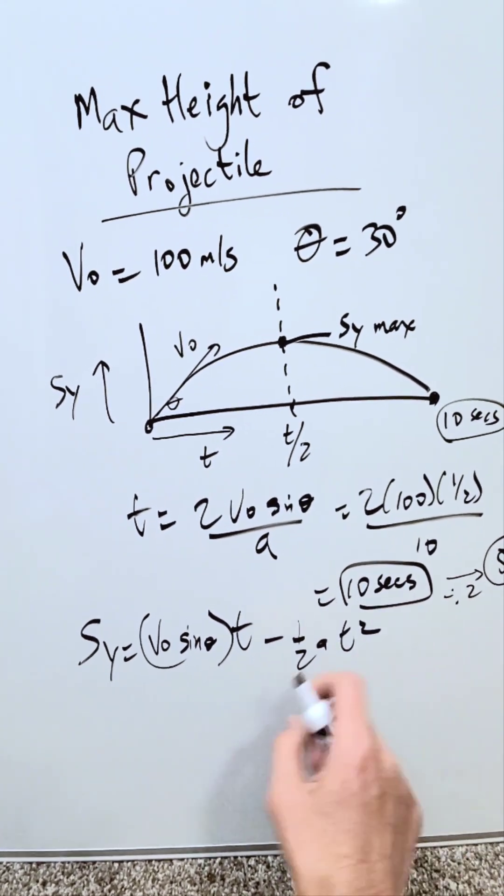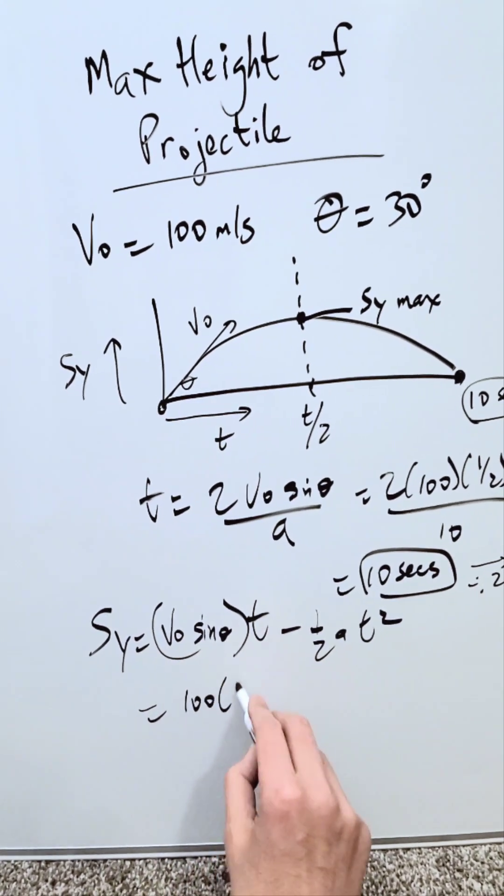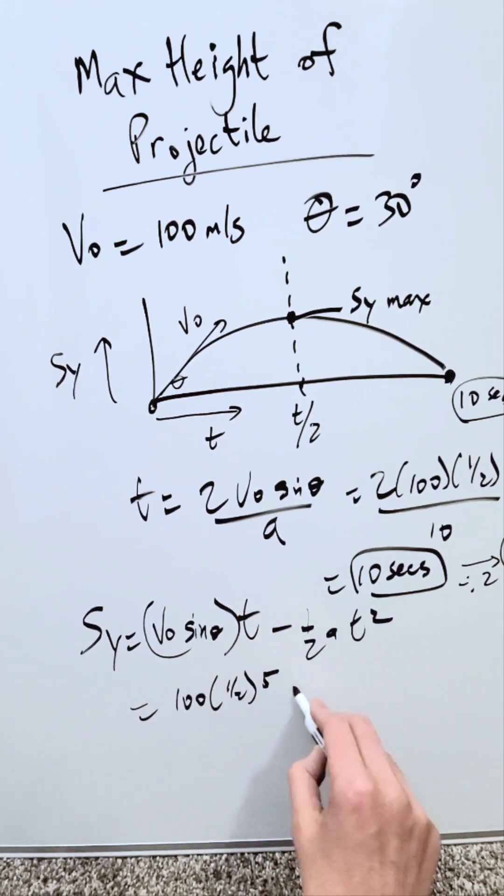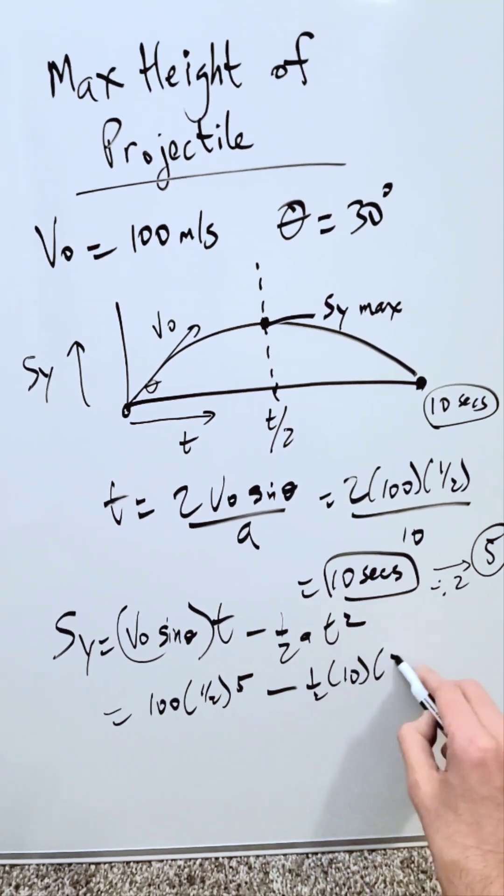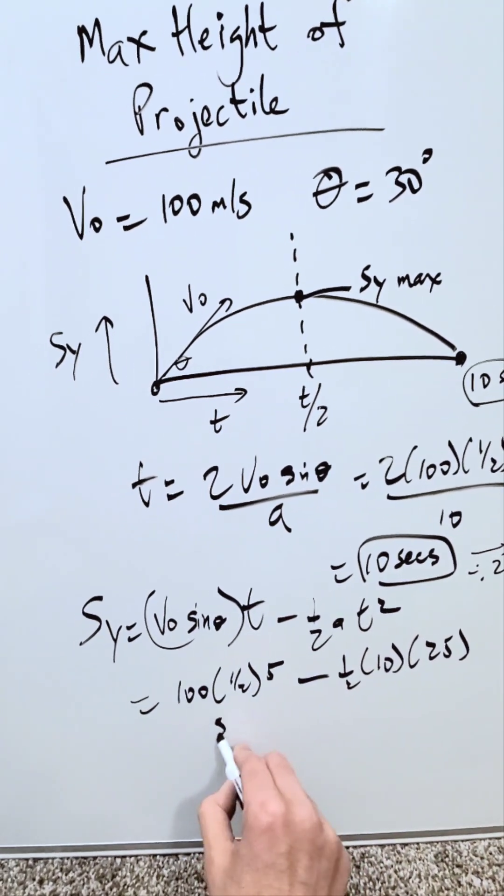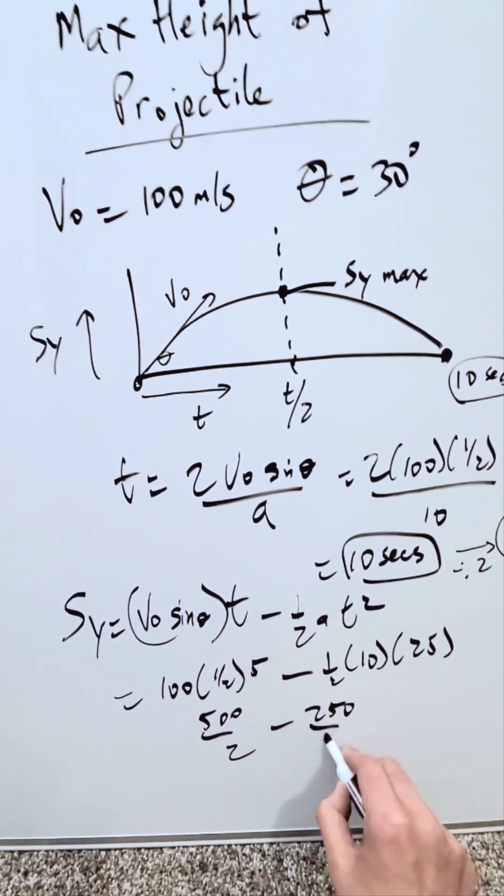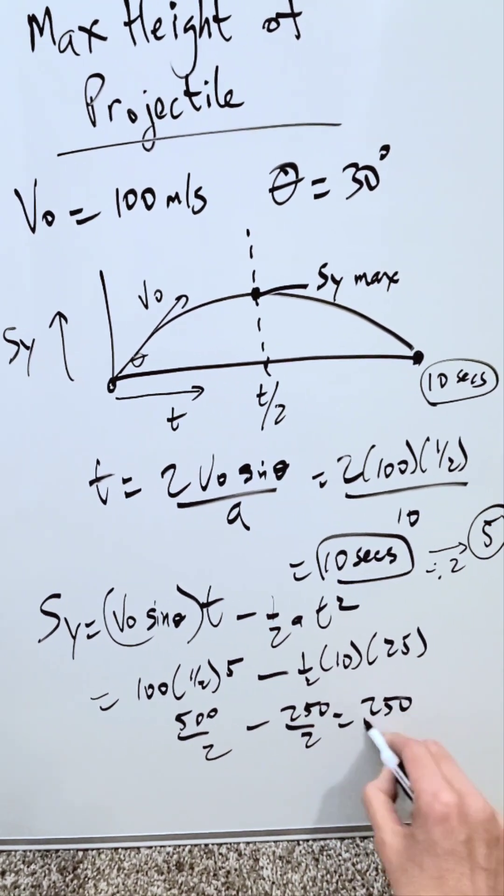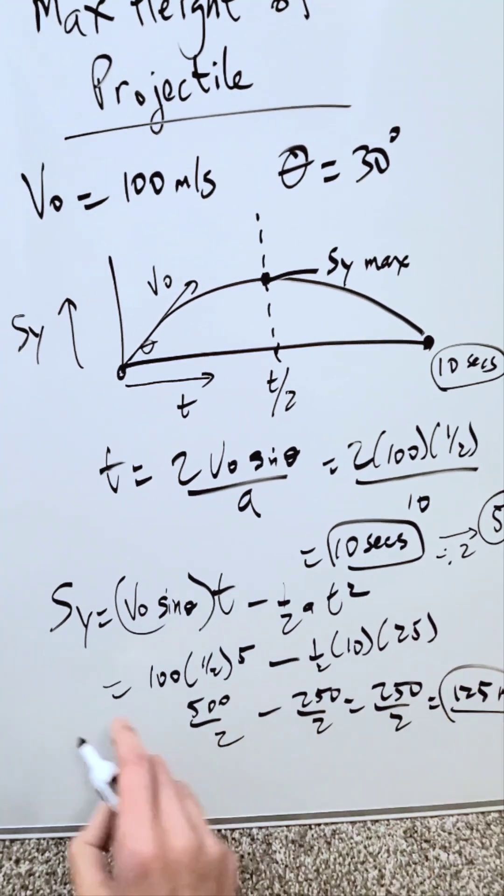You plug in 5 in places of t and plug everything else. Initial velocity 100, sine of 30, 1 over 2, time 5, minus half, acceleration 10, and then time over 25. I have 500 over 2 minus 250 over 2, and this is going to be 250 over 2 meters or just say 125 meters.